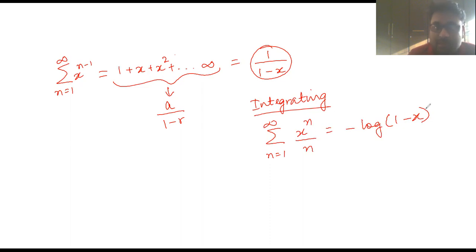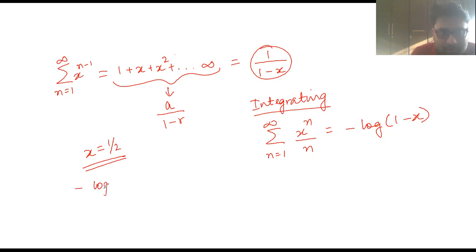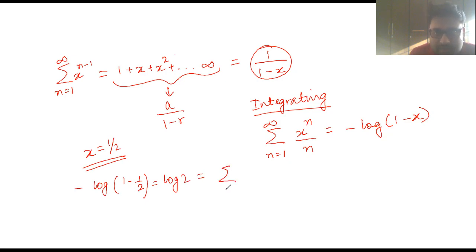Now suppose I put x = 1/2. I get -log(1 - 1/2), which is log 2. So log 2 equals the summation from n=1 to infinity of (1/n)·(1/2)^n.